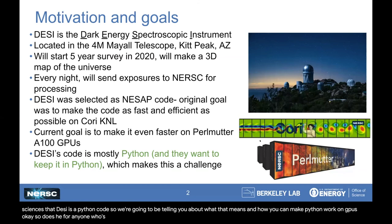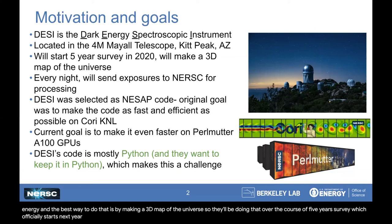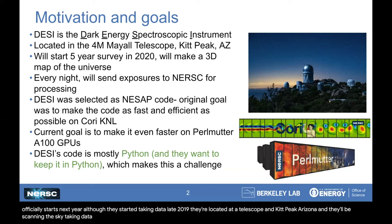DESI, for anyone who's not familiar, is the Dark Energy Spectroscopic Instrument. Their mission is to better understand dark energy, and the best way to do that is by making a 3D map of the universe. They'll be doing that over the course of a five-year survey, which officially starts next year, although they started taking data late 2019. They are located at a telescope in Kitt Peak, Arizona, and they'll be scanning the sky, taking data, sending those data to NERSC every night for five years.